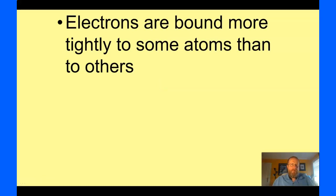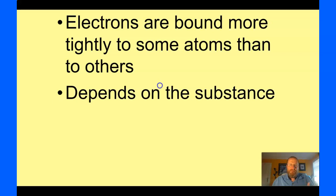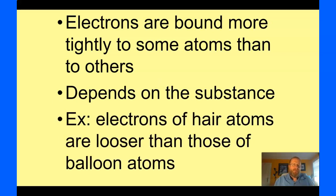But some substances hold on to their electrons tighter than others. Depends on the substance. Examples would be balloons and hair. Balloon is made out of latex rubber. Hair is made out of keratin. Same thing your fingernails and skin are made out of. Hair does not hold on to electrons very tightly. However, rubber latex does. So, you rub them together, you can knock some electrons off. You can get one of them to be negatively charged, and the other one to be positively charged.